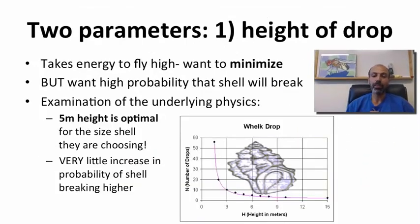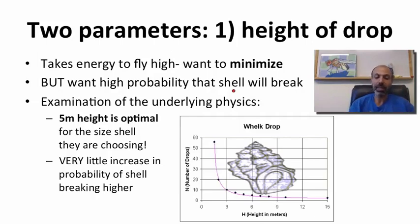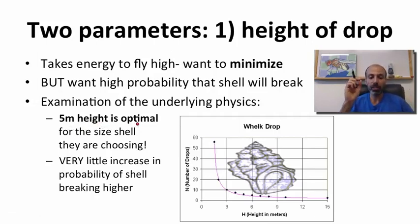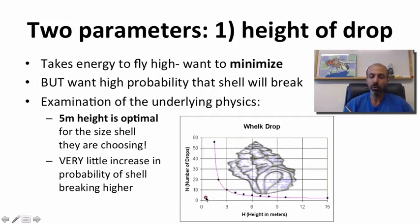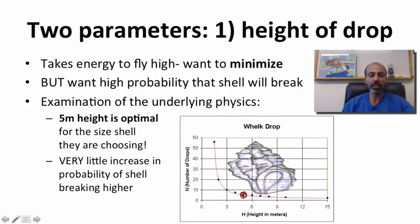Let's break it into parameters. First, the height of drop. It takes energy to fly high, so you want to minimize that energy, but you want a high probability that the shell will break — you don't want to fly 40 times. People looked at this in the context of the underlying physics, and it turns out five meters height is optimal for that size shell to shatter. On the x-axis is height in meters, on the y-axis is number of drops required to break the whelk shell. At five meters, there is very little increase in probability of shell breaking if you go any higher. So that does seem to be adaptive.